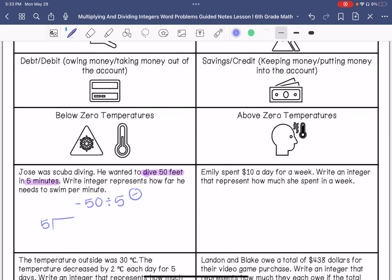5 goes into 5 once. 5 goes into 0, 0 times. So my answer is negative 10 feet per minute.